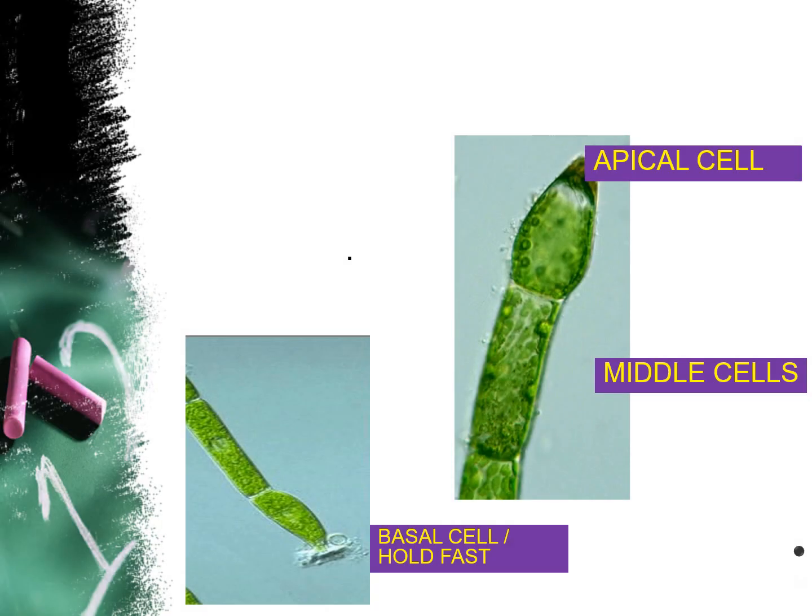The filament or thallus of Oedogonium has three different types of cell. First is the apical cell, which is round and small in nature and chlorophyllated. The cell in the middle is known as the middle cell, which is cylindrical and longer than broad, tapering towards the end, and chlorophyllated.